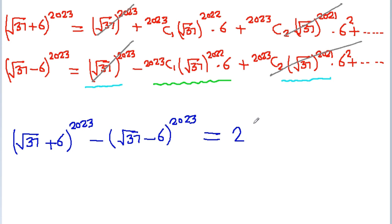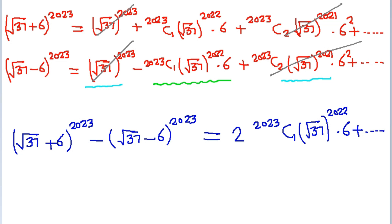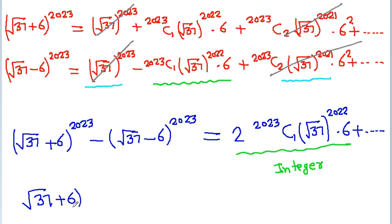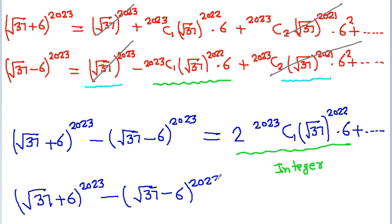So we get: (√37 + 6)^2023 - (√37 - 6)^2023 = 2·[2023C1·√37^2022·6 + ...], which is an integer. Thus (√37 + 6)^2023 minus (√37 - 6)^2023 equals an integer.